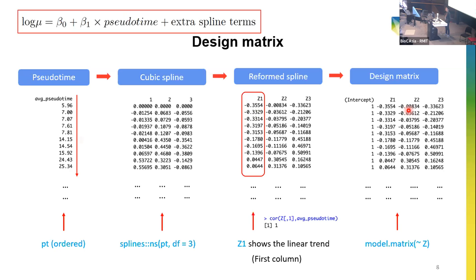An online question from Dario: would you have gotten the same results without doublet removal? The proportion of doublet cells looks relatively small. For some of our samples, the doublet rate could be about 10%, so we think we should remove those doublets. If we don't remove them, the results might be similar, but it's a good idea to remove doublets to reduce biases.